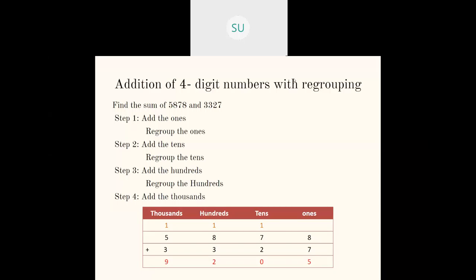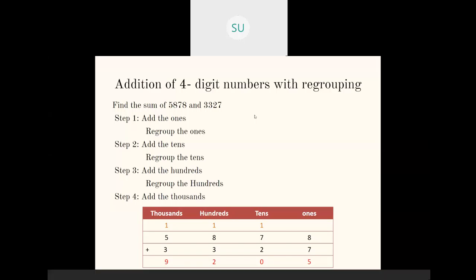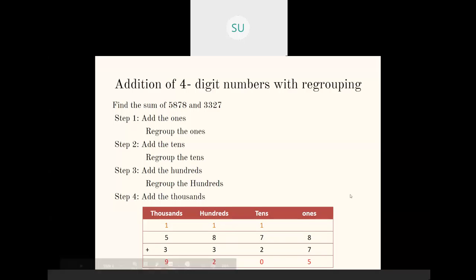Now we'll add the tens place. We add the one which is carried over, plus seven plus two, which is ten. So here I have ten tens. We'll regroup that ten tens as one hundred and zero tens. So one hundred will carry over to hundreds place and zero we'll write in the tens place.